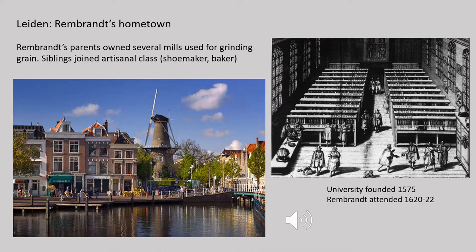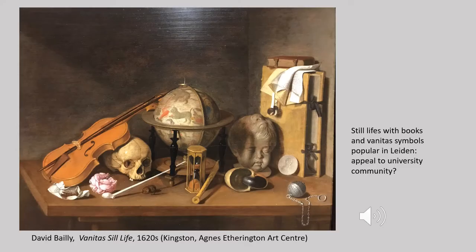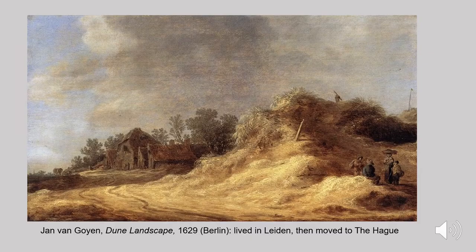Rembrandt's family was deeply embedded in the artisanal culture of Leiden. His parents owned several mills that ground grain for beer brewing, his siblings followed the family business or became shoemakers or bakers. Rembrandt attended the university for two years, which probably means he didn't originally intend to be an artist. Vanitas still life was particularly popular in Leiden, as was still life involving books and accoutrements of intellectual life — imagery that possibly appealed to the community of intellectuals surrounding the university. Jan van Goyen also painted his dune landscapes in Leiden before leaving for The Hague in the early 1630s.